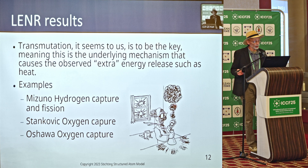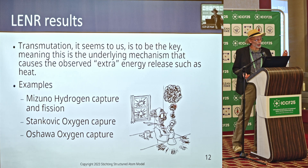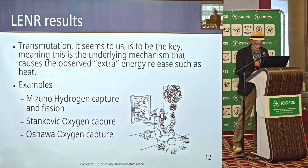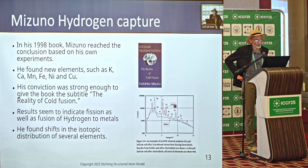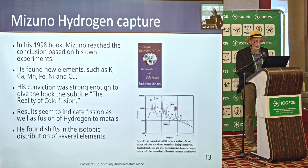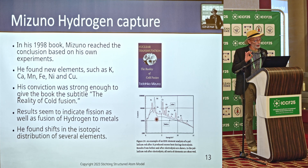Let's take a look at a few LENR results that subscribe to this idea. Transmutation seems to be the key — the underlying mechanism that causes observed extra energy release such as heat. I'm going to go through examples from Mizuno, Stankovic, and Osawa. Mizuno, already in 1998, reached a conclusion based on his own experiments, finding a whole range of lighter elements — potassium, calcium, manganese, iron, but also fluorine, oxygen, carbon, etc. — totally depending on the source material, including what isotope is offered.